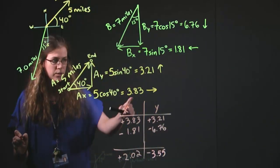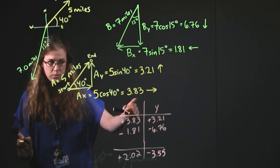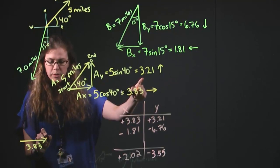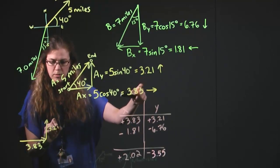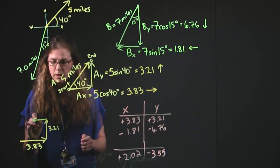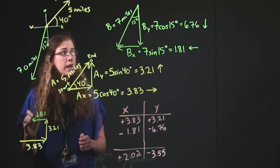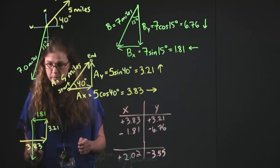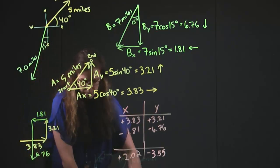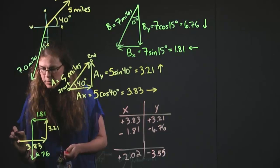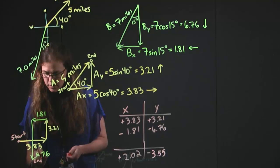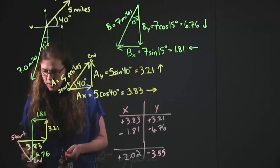So, we've got 3.83 to the right, and we have 3.21 up, then we have 1.81 to the left, and we have 6.76 down. What that tells us is that our final vector goes from the very start and to the very end, and it's going to point down and to the right.